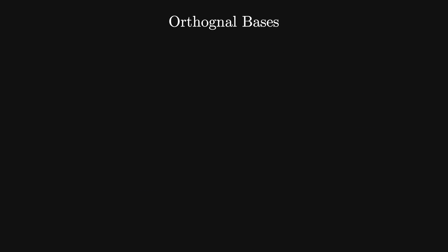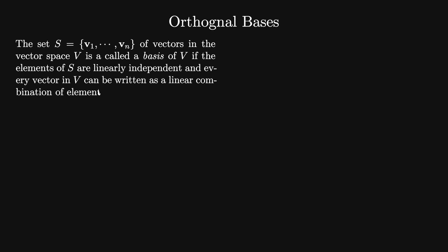Now that we have understood the concepts of inner product and orthogonality, we can use them to understand properties of vectors in vector spaces and subspaces. One very useful concept is that of a basis. The set S of vectors in the vector space V is called a basis of V if the elements of S are linearly independent and every vector in V can be written as a linear combination of elements in S. Thus every basis is a linearly independent spanning set. N-dimensional vector spaces have bases consisting of N linearly independent vectors. Every vector space that we know of has a basis.